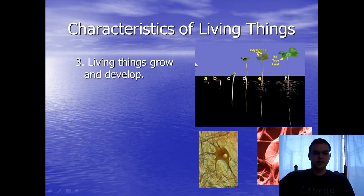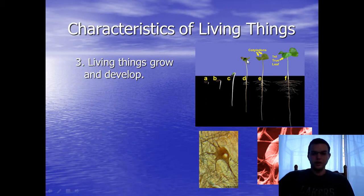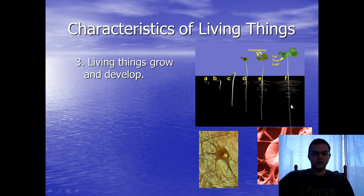Living things have the ability to grow and develop. You have a seed, and when the conditions are right, the seed starts to sprout — you can see the roots and leaves starting to develop. The root starts to branch off to increase the surface area so it's easier to absorb things from the soil. These pictures here are showing a nerve cell and a red blood cell.